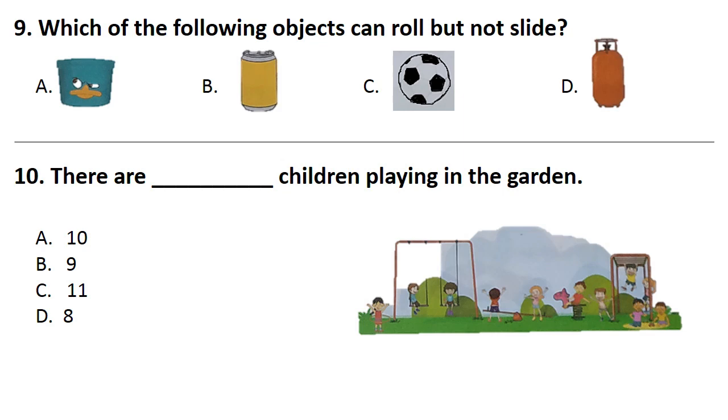Question No. 9. Which of the following objects can roll but not slide? Answer is Option C. That is ball.